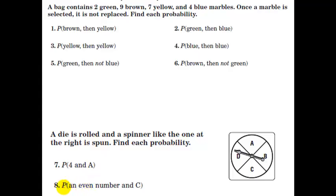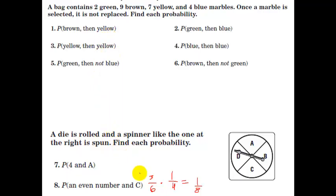Find the probability of an even number and a C. To get an even number rolling a dice, there are three chances out of six. To spin a C, there's one chance out of four. Reducing three-sixths to one-half, then one-half times one-fourth is one-eighth. So the overall probability of getting both an even number on the dice and a C on the spinner is one-eighth. The objective is to find the probability for each individual event and multiply them together to get the joint probability.